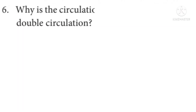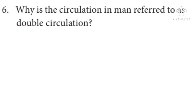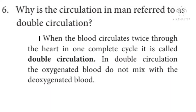Question 6: Why is the circulation in man referred to as double circulation? It is on page number 208. In man, the blood circulates twice through the heart in one complete cycle, so it is called double circulation. In double circulation, the oxygenated blood does not mix with the deoxygenated blood.